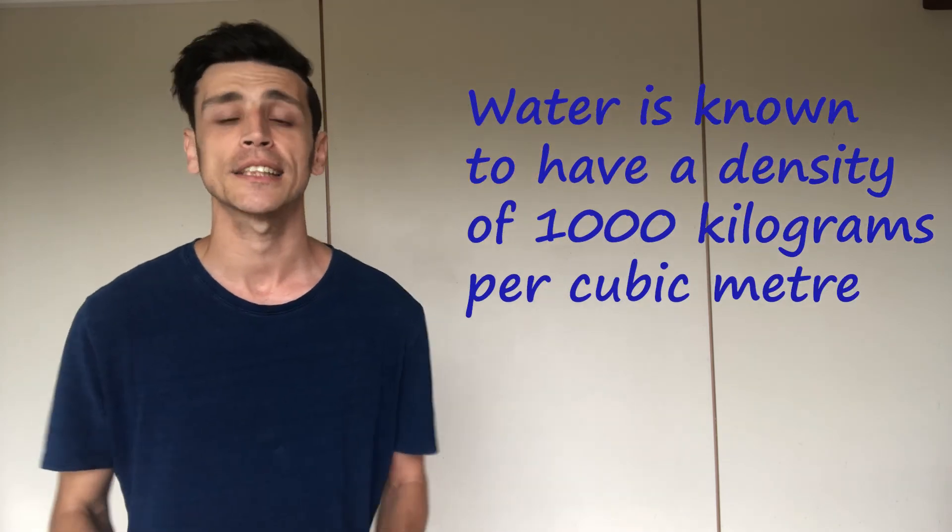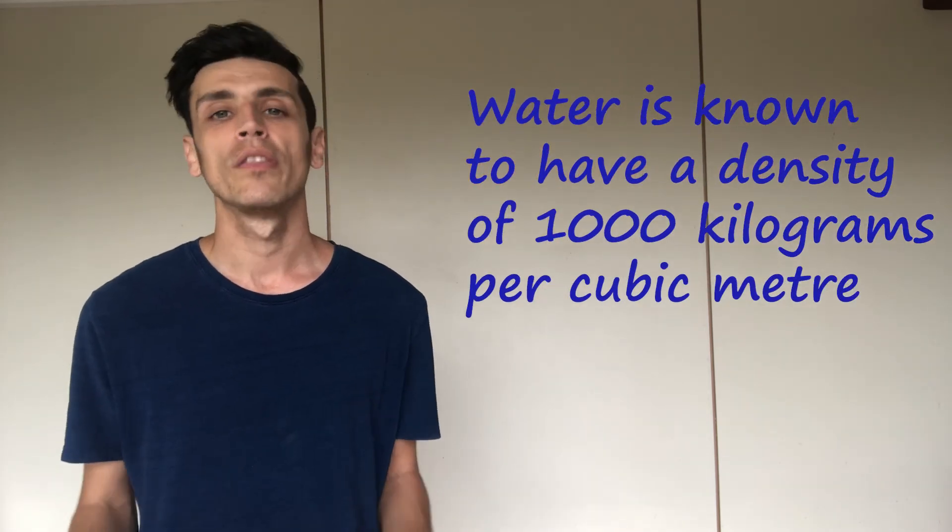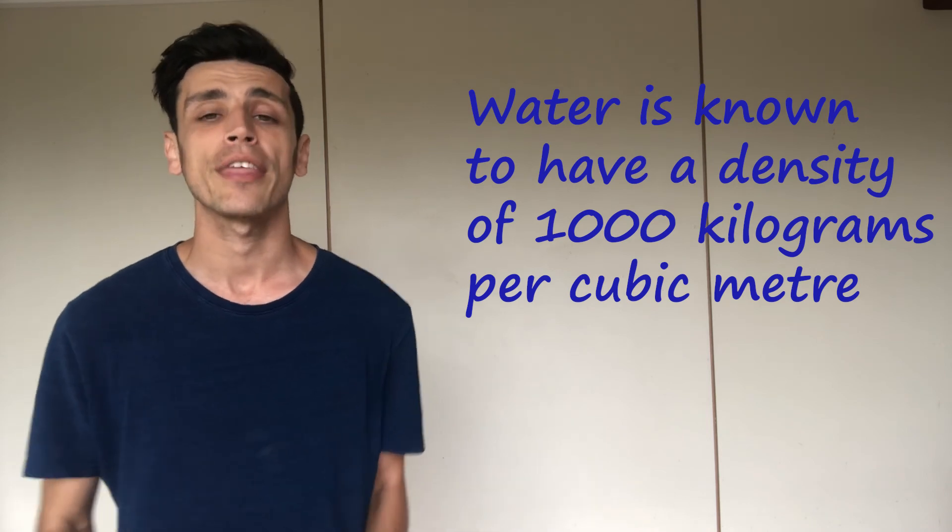So there you go, that is the density of water and if you actually check this out yourself this is actually an identity. So we've clearly done it right that the density of water is in fact 1,000 kilos per cubic meter.